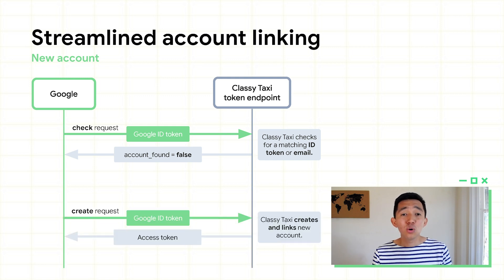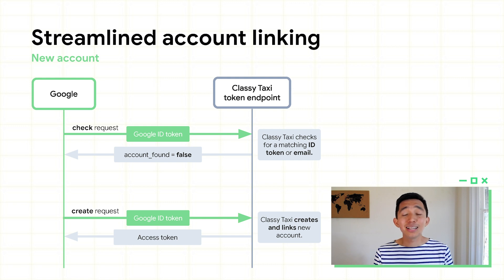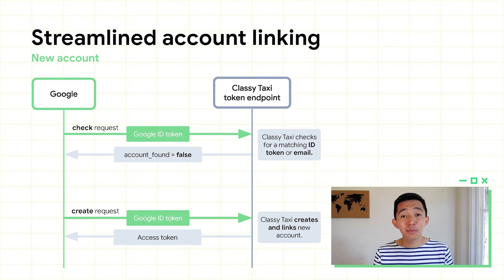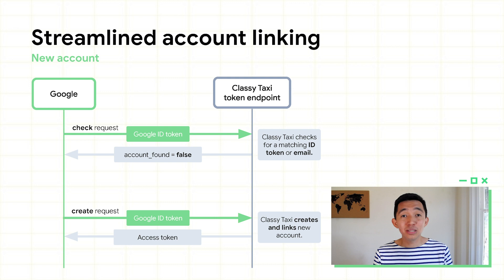Next, Google will send a create request, along with the ID token. Classy Taxi will create an account using the user's email, name, and profile picture. After the account is created, Classy Taxi will link the new Classy Taxi account with the Google account and return the access token.